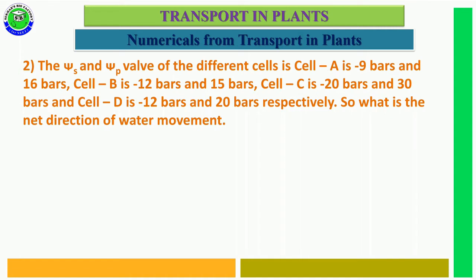Question number 2. The ψS and ψW values of different cells are: Cell A is minus 9 bars and 16 bars; Cell B is minus 12 and 15 bars; Cell C is minus 20 bars and 30 bars respectively. What is the net direction of water movement? Cell A water potential = minus 9 + 16 = 9 bars.